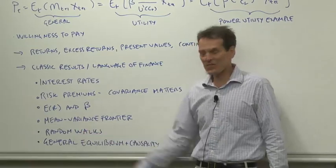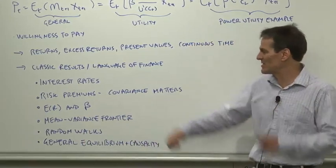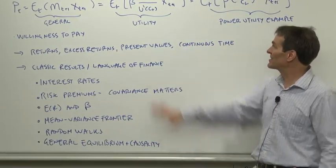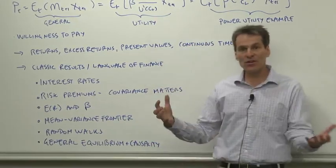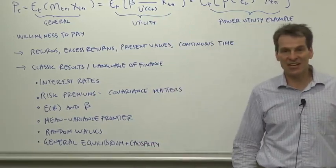We'll look at random walks in efficient markets and that set of thoughts about the time series evolution of asset pricing. We'll think about general equilibrium—how this sits as part of a larger economic model—and the question of causality: which is the chicken and which is the egg?